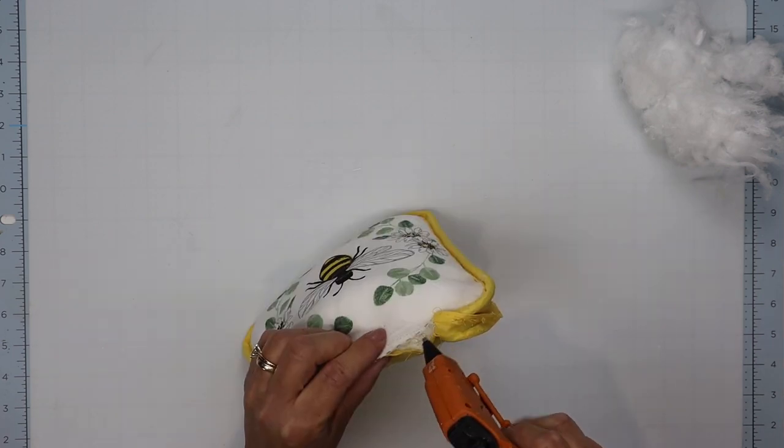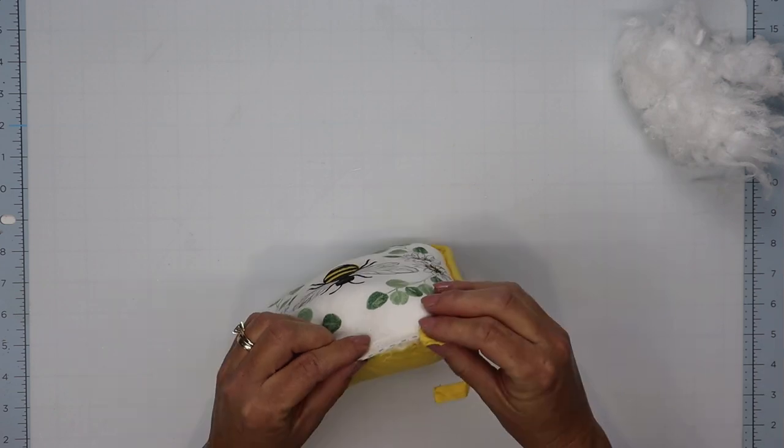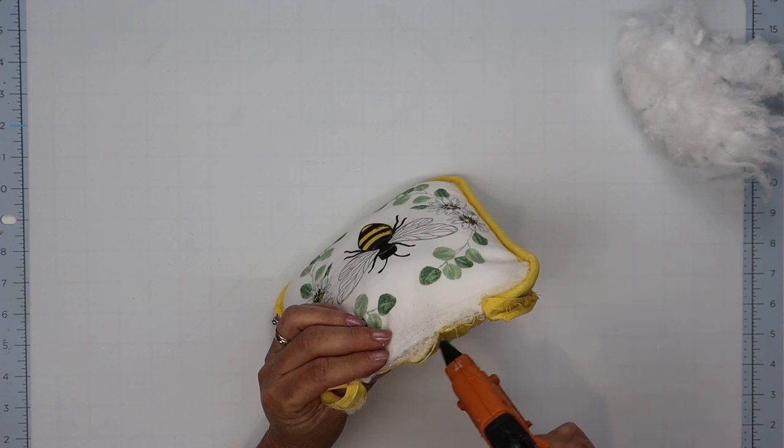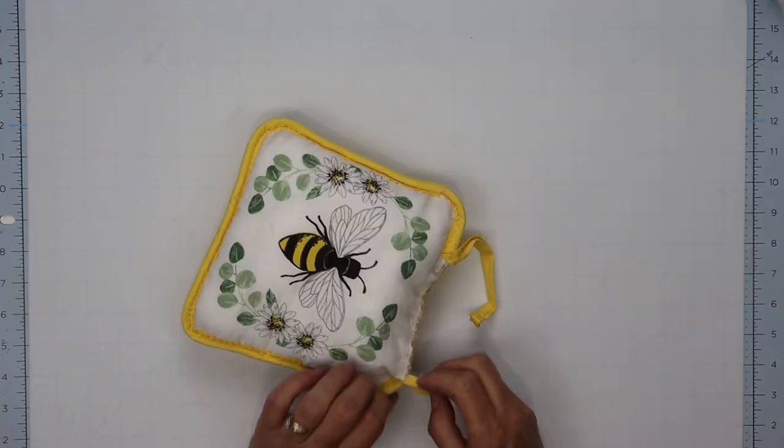Once I have it filled enough, I'm going to close that top up by using small sections at a time. I'll pull it tightly, add a little bit of hot glue or fabric hot glue, and hold that together until the glue cools and sets and do that across the top.